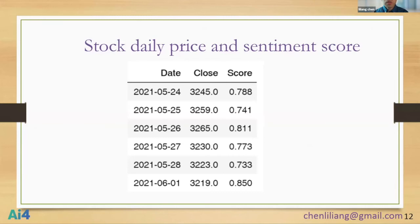Once we have a sentiment score, we can merge this data together with a particular stock. Here you can see stock price data in a time series format. The first column is the date, the second column is the closing price, and the third column is the sentiment score for that particular stock. Normally the sentiment score is a number between 0 and 1.